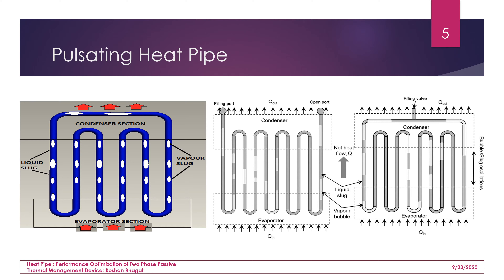The pulsating heat pipe can be categorized into two types: closed loop pulsating heat pipe and open loop pulsating heat pipe. The open loop has open ends, whereas the closed loop has closed ends. A filling valve is required to fill the working fluid, but the tube must be evacuated first. Various filling ratios are used, but having a filling valve is somewhat disadvantageous because leakages can still occur over time.